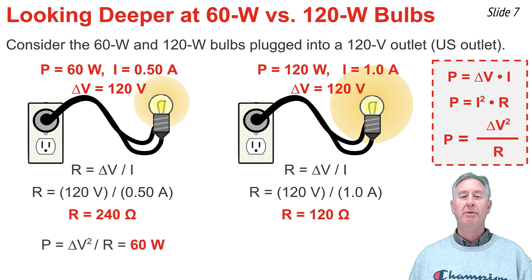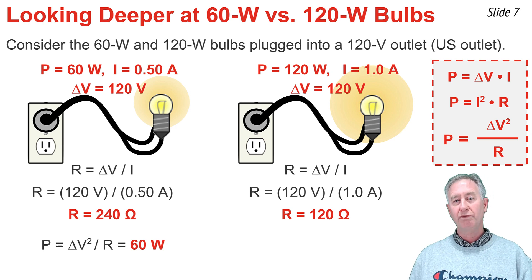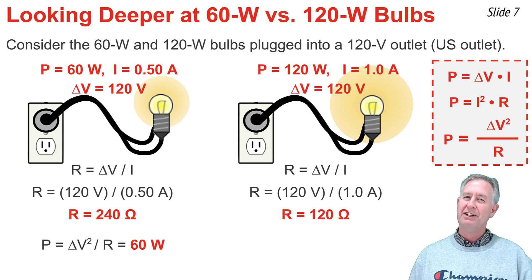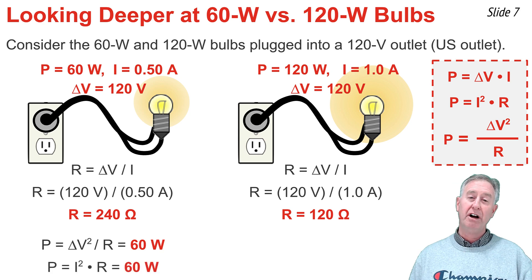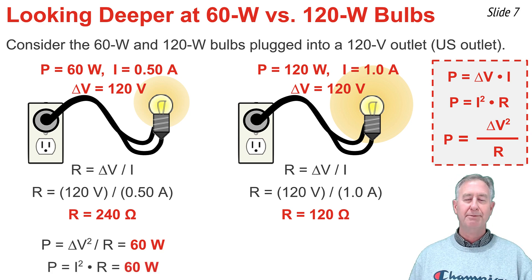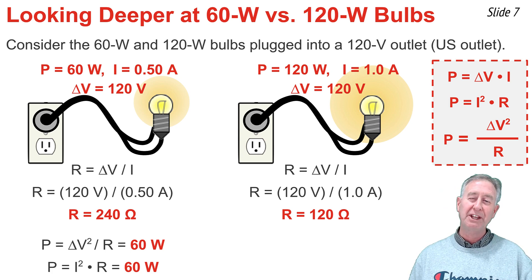For the 60-watt bulb, using P equal delta V squared divided by R — that's 120 squared divided by 240 — that comes out to be 60 watts, just as expected. Now using P equal I squared times R — plugging in 0.5 squared, which is 0.25, multiplied by the R of 240 — that's also 60 watts, just as expected.